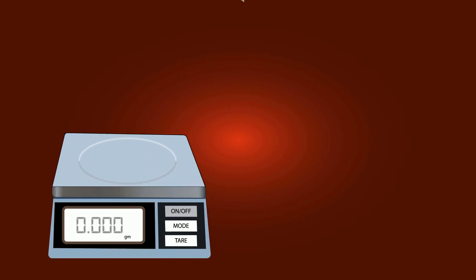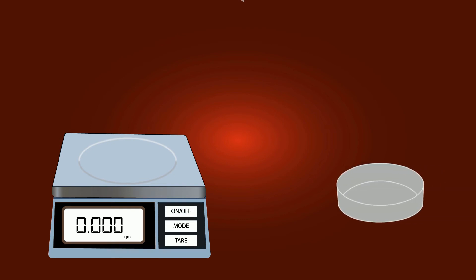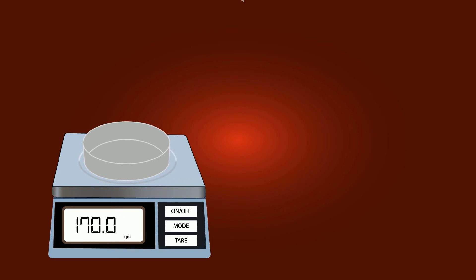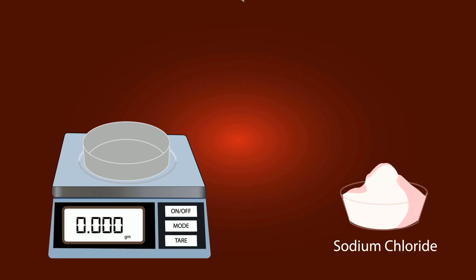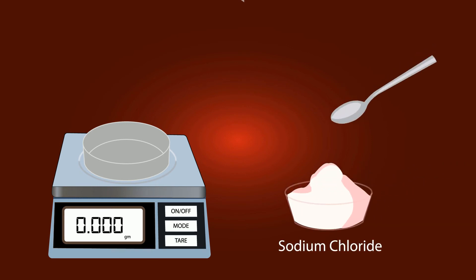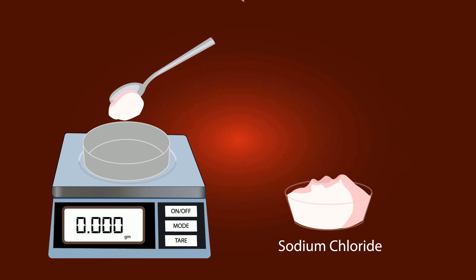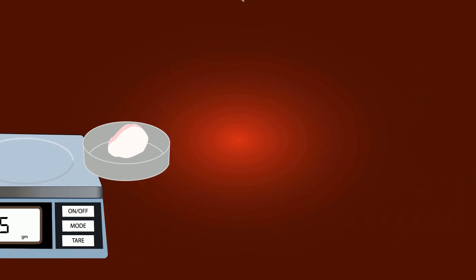First, take a mass balance and power it on. Now put a petri dish onto the measuring balance and tare it so you get a zero reading initially. Now take sodium chloride and put it into the petri dish with a spoon precisely to get 58.5 grams of NaCl.